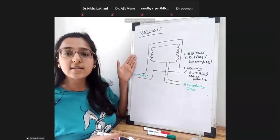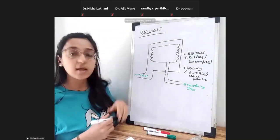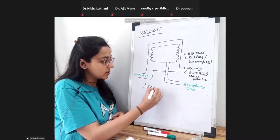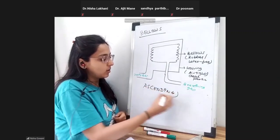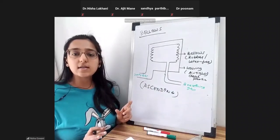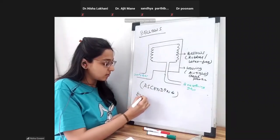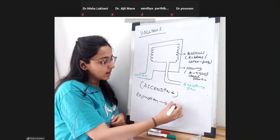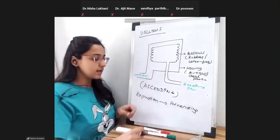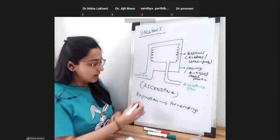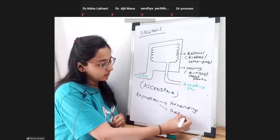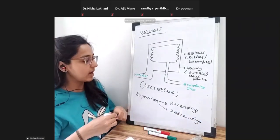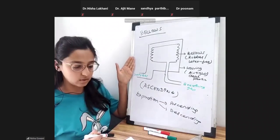This is how the bellows assembly looks. Bellows can be ascending type or descending type. What I have drawn here is the ascending type. What determines ascending or descending is the expiration — if the bellows are ascending during expiration, they are known as ascending type. If during expiration they are descending, they are the descending type.